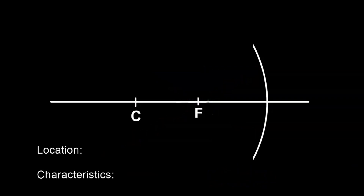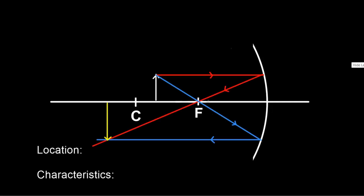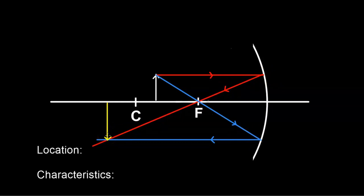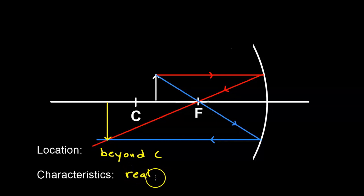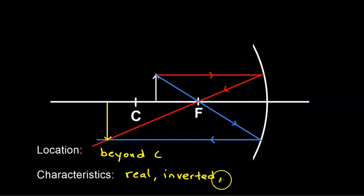Now we're going to take a look at a situation where the object is between C and F. The red line is parallel to the optical axis and bounces off through the focal point. The blue line goes through the focal point and is parallel to the optical axis. The location of our image here is going to be beyond C. The characteristics are: it is real — I could put a sheet of paper at that location and get an image — the image is inverted, and it is larger than the original object.